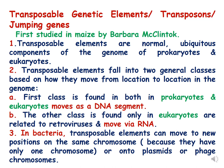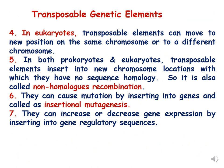The other class is found only in eukaryotes, is related to retroviruses, and moves via RNA. In bacteria, transposable elements can move to new positions in the same chromosome or onto plasmids or phage chromosomes. In eukaryotes, transposable elements can move to new positions in the same chromosome or to a different chromosome.